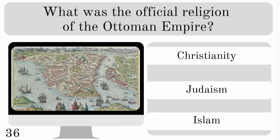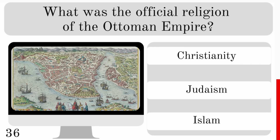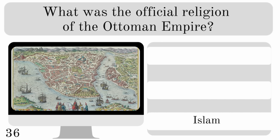What was the official religion of the Ottoman Empire? Was it Christianity, Judaism or Islam? And the answer is Islam.